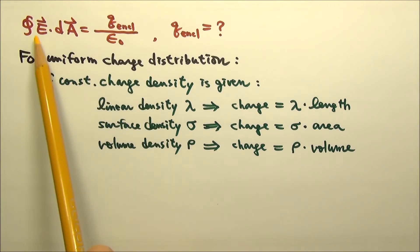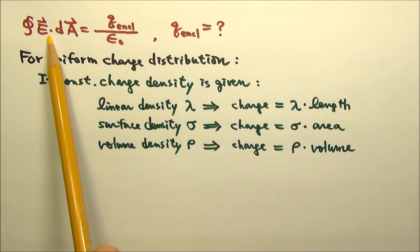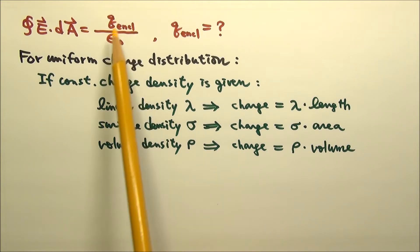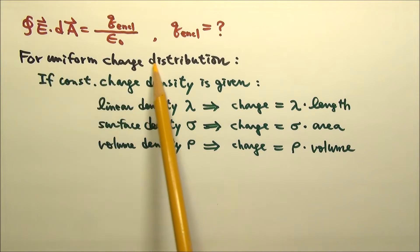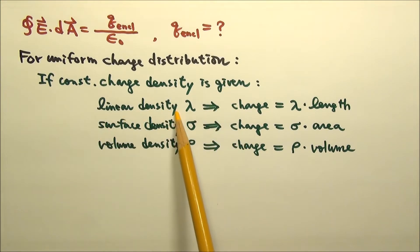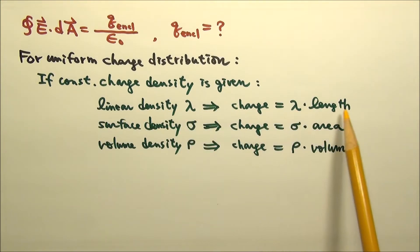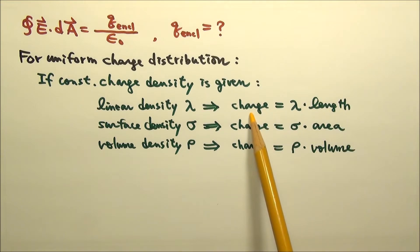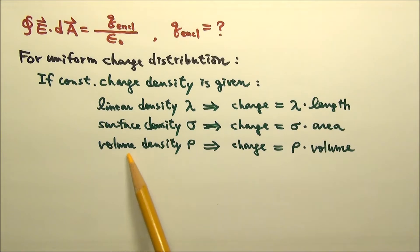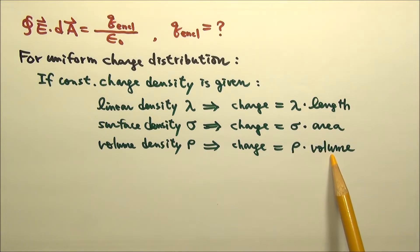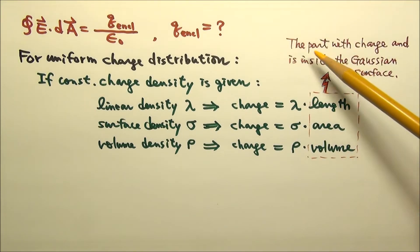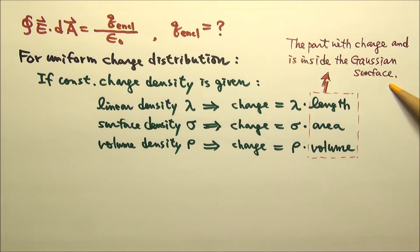Using Gauss's law to find the electric field requires us to find q-enclosed, the net charge inside a Gaussian surface. If charges are uniformly distributed so the charge density is a constant: for linear charge density lambda, we multiply lambda by length; for surface charge density sigma, we multiply sigma by area; and for volume density rho, we multiply rho by volume — using the length, area, or volume that contains charge and is inside the Gaussian surface.